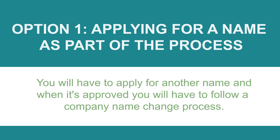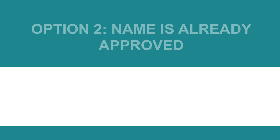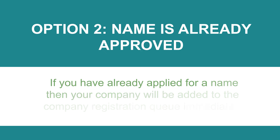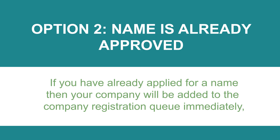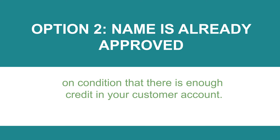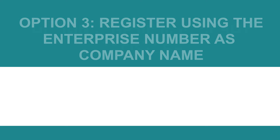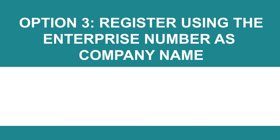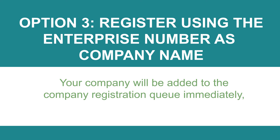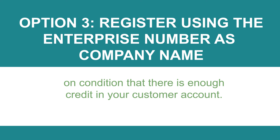Option two — the name is already approved: if you have already applied for a name, your company will be added to the company registration queue immediately, on condition that there is enough credit in your customer account. Option three — register using the enterprise number as the company name: your company will be added to the company registration queue immediately, on condition that there is enough credit in your customer account.